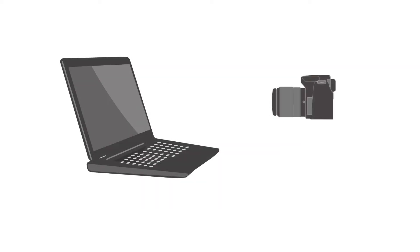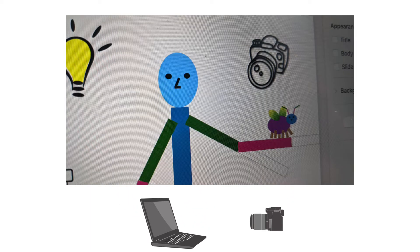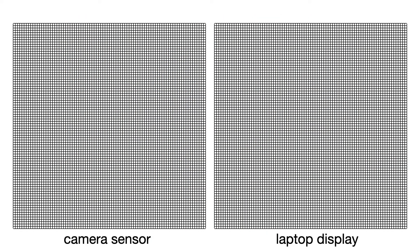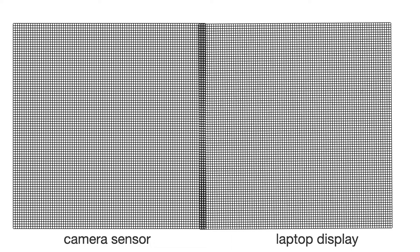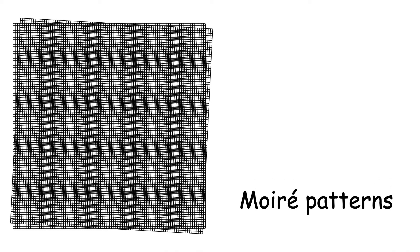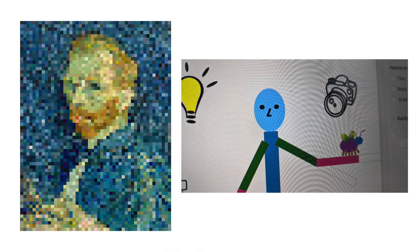For example, have you ever tried to take a photo of your laptop screen and got weird patterns? Turns out this is very related to our image resizing problem. What's happening is that there are two grids — the camera sensor and the laptop display — and these grids interact in strange ways. You see those funny fringe effects? They're called moiré patterns. The splotches on the Van Gogh image are a type of moiré pattern.